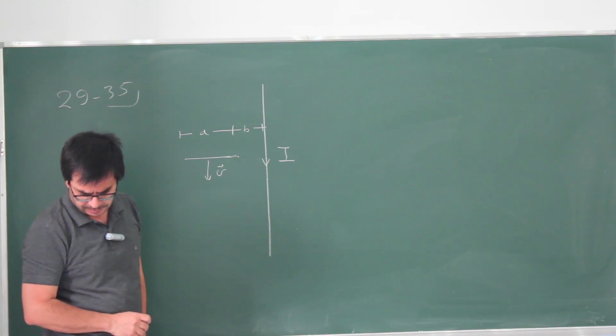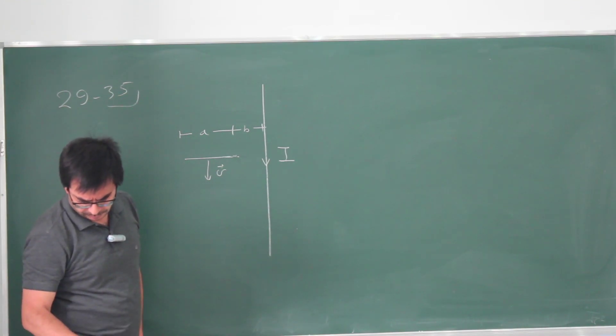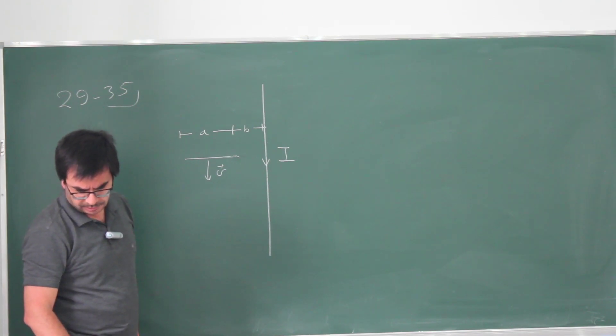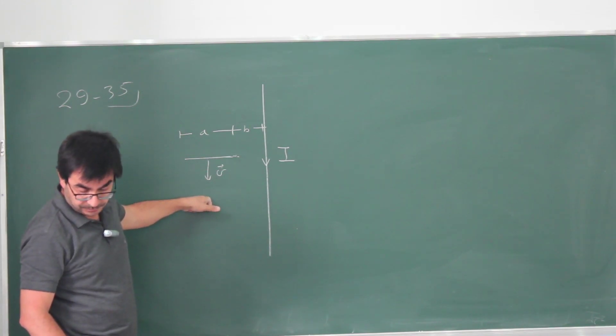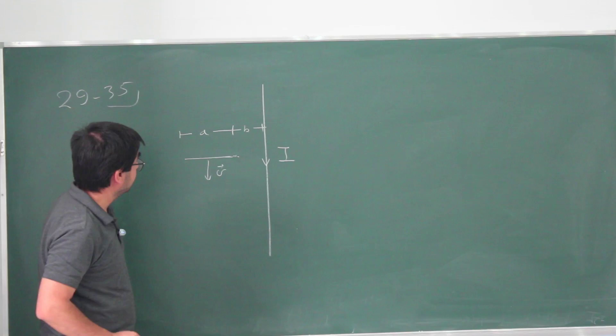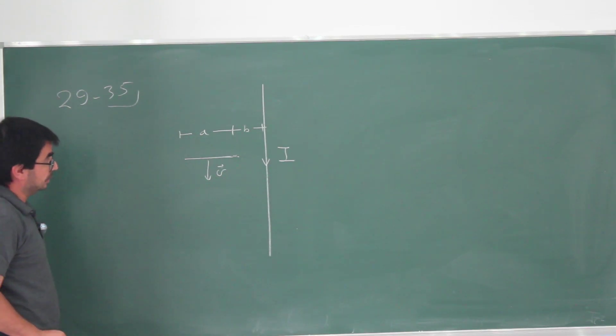We are asked to determine the EMF between the ends of the short section, assuming that V is in the same direction as I, going down as I've drawn here, or in the opposite direction to I, going up, or perhaps the direction of the current has changed.